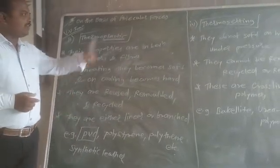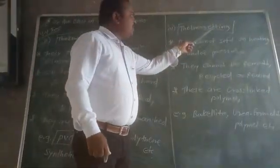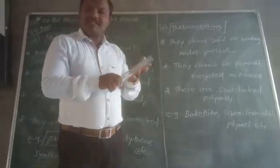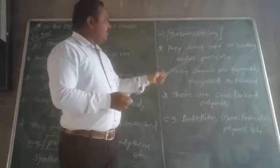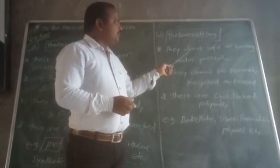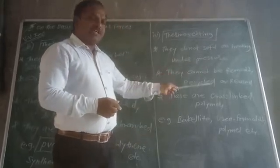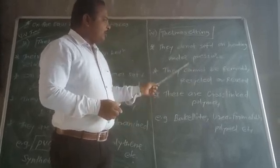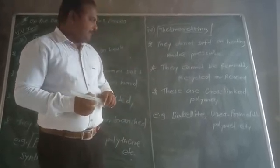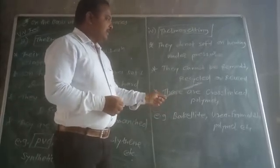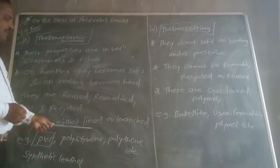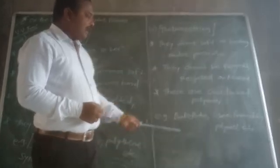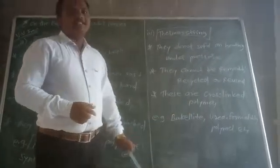In thermosetting polymers, once set by heat and pressure, they become permanently hard. The polymers which do not soften on heating under pressure are called thermosetting polymers. They cannot be reused, recycled, or remolded. These are cross-linked polymers. Examples of thermosetting polymers include bakelite, urea-formaldehyde polymers, etc.